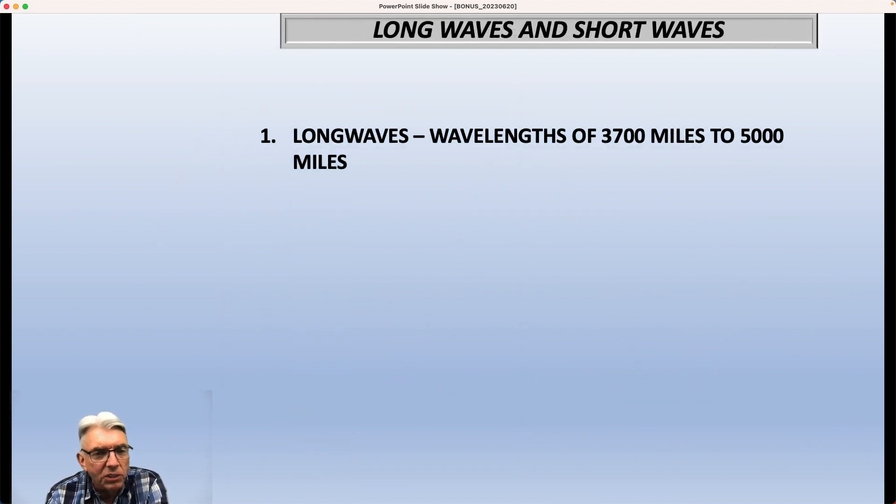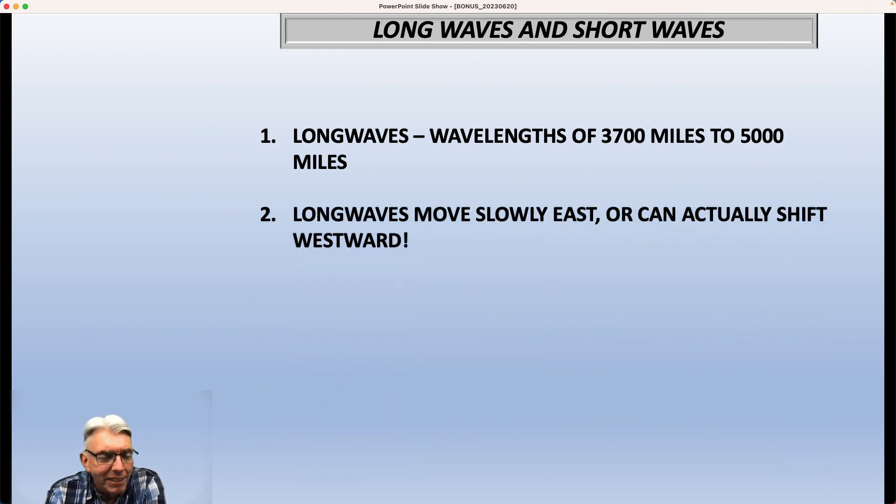Okay, so now let's talk about some numbers relating to both of these types of waves. Long waves in the upper atmosphere generally have wavelengths of anywhere from 3,700 to 5,000 miles, which means that it can be more than the United States in terms of wavelength. The United States is about 3,000 miles across and so these are very, very long waves and they typically either don't move much at all or they move very slowly eastward or in some cases they can actually shift westward,